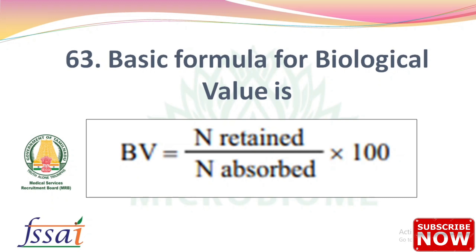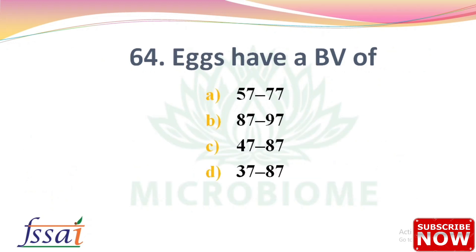Next: The basic formula for biological value is: Biological Value = (Nitrogen retained / Nitrogen absorbed) × 100. Next: Eggs have a biological value of — options: 57–77, 87–97, 47–87, 37–87. The right answer is option B, 87 to 97.